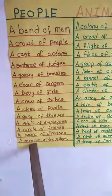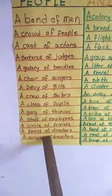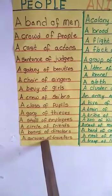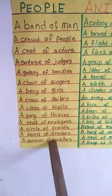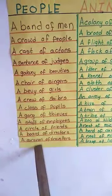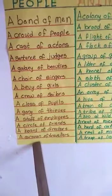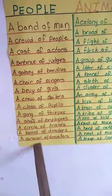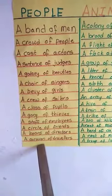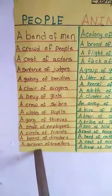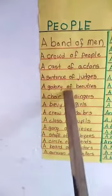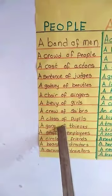Next, a caravan of travelers. People traveling by camel carts and bullock carts are called a caravan of travelers. They travel together in groups across deserts and across states by these caravans. A caravan is also a vehicle in which travelers travel, sleep, and eat until they reach their required destination. We have now completed a few of the collective nouns given for people.